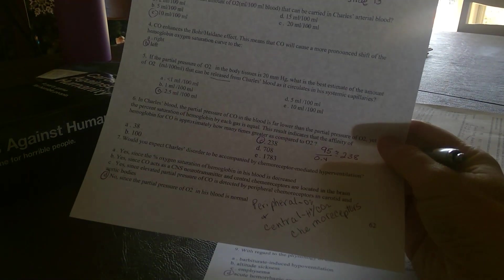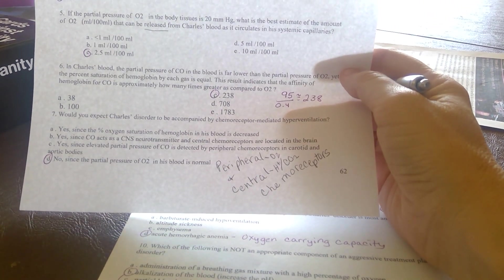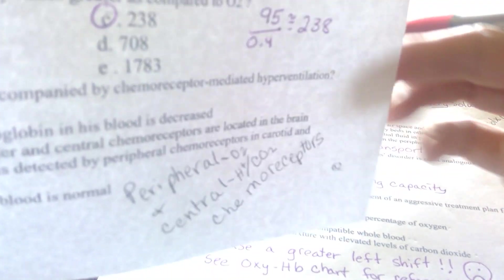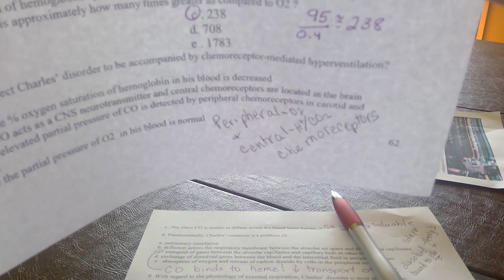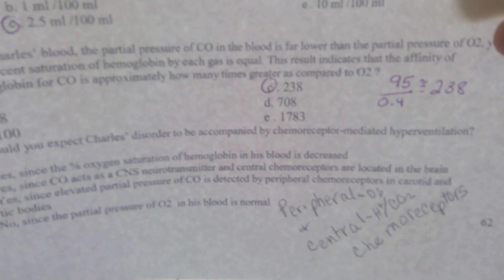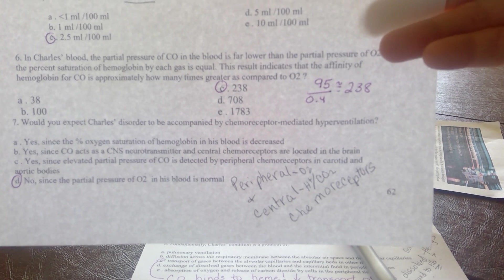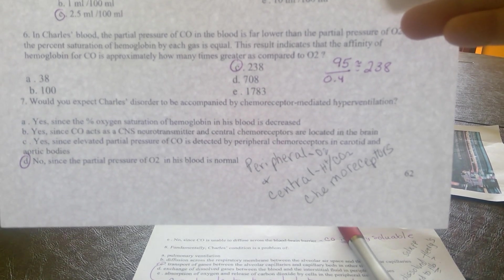The next question asks, would Charles have a difference in his breathing based on chemoreceptor-mediated hyperventilation? If you look at my lecture on chemoreceptors, you know that we have peripheral and central chemoreceptors. The peripheral are found in your carotid sinus and aortic arch. The central are found in the fourth ventricle. You learn from lecture that the peripheral preferentially looks at oxygen levels and the central preferentially binds to hydrogen.